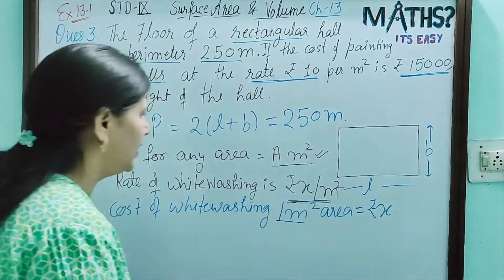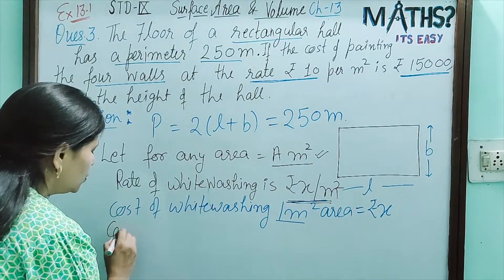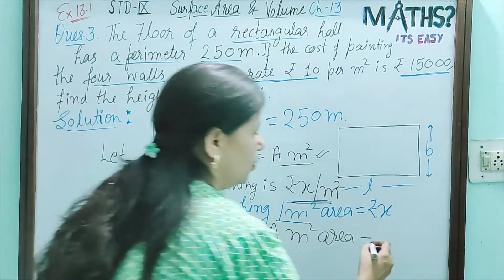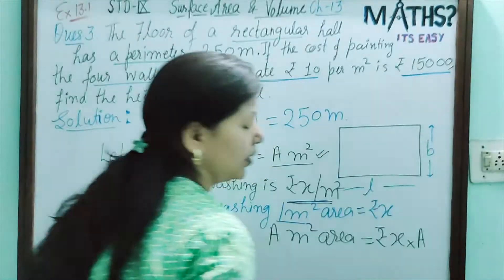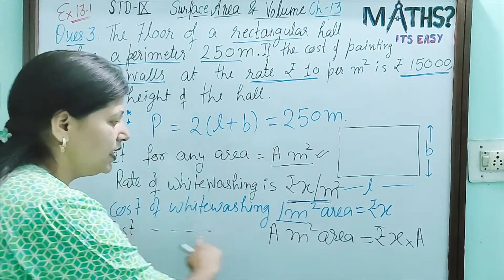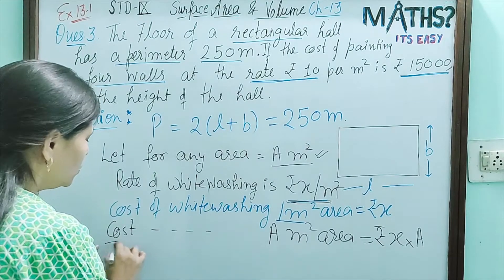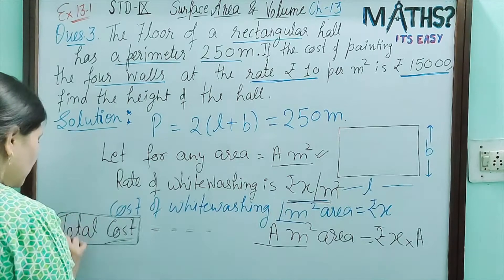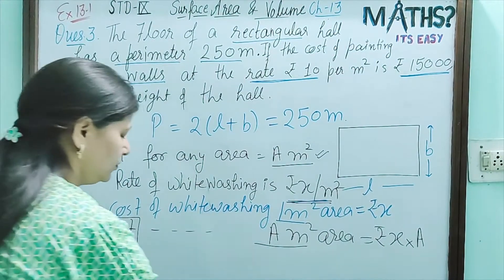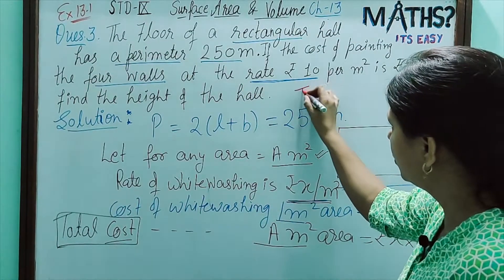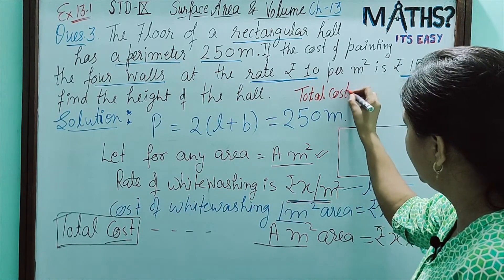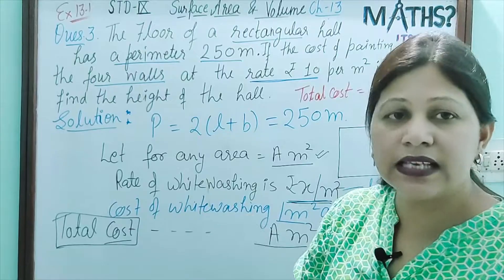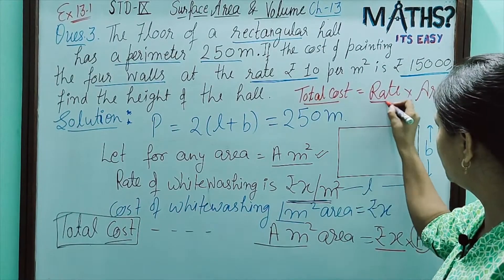Now, how much area do we have to paint? We have to paint 'A' metre square area. So, cost of painting 'A' metre square area — total cost becomes rupees X into A. So, we can write this as a formula: Total Cost = Rate × Area.